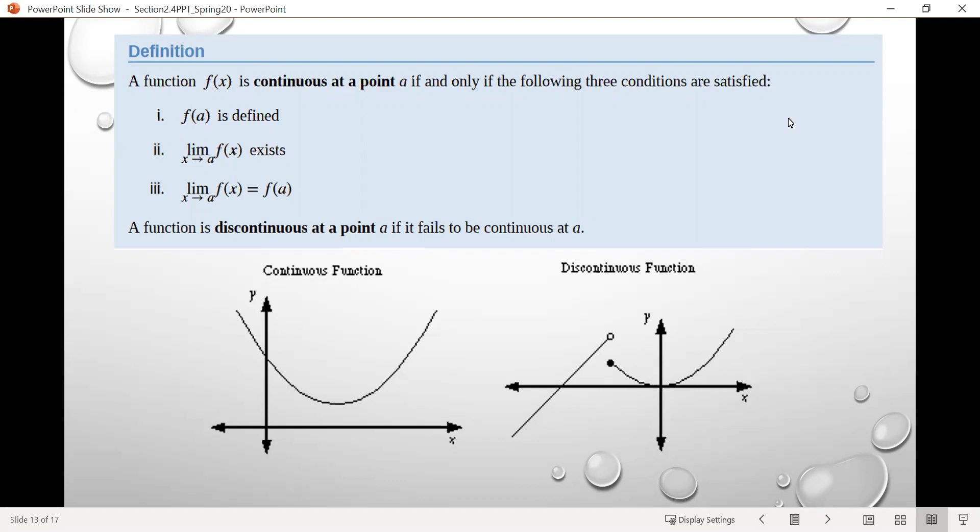Secondly, the limit as x approaches a of f of x exists, and so that assumes the limit exists from both sides. And that third criteria there, that the limit as x approaches a of f of x actually is equal to what we get when we input that value into the function.